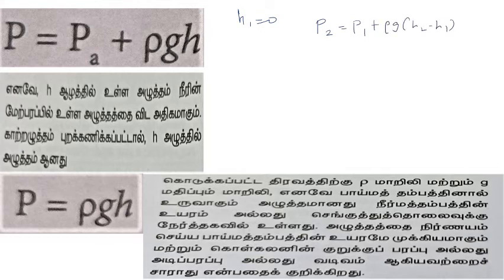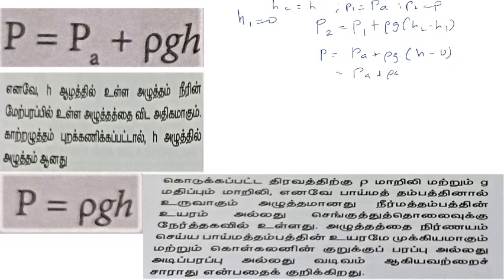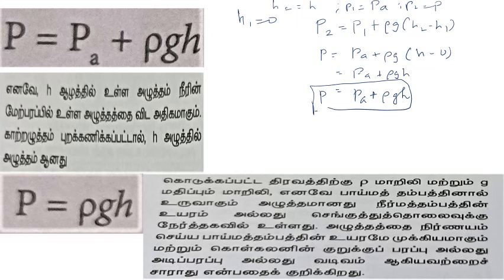This formula is made by setting h2 equals h, h1 equals 0, P1 equals Pa. So P2 equals P0, and p equals Pa plus rho g h, where h2 minus h1 equals 0. This gives the formula p equals pA plus rho g into h.